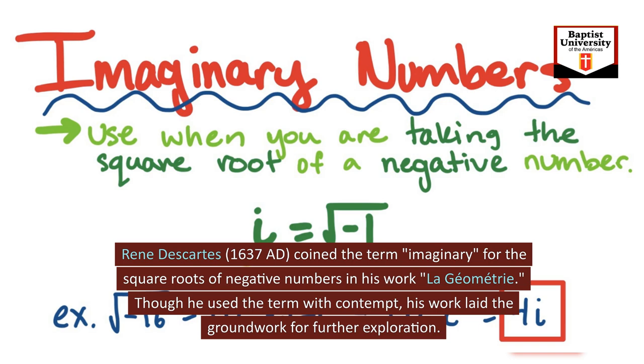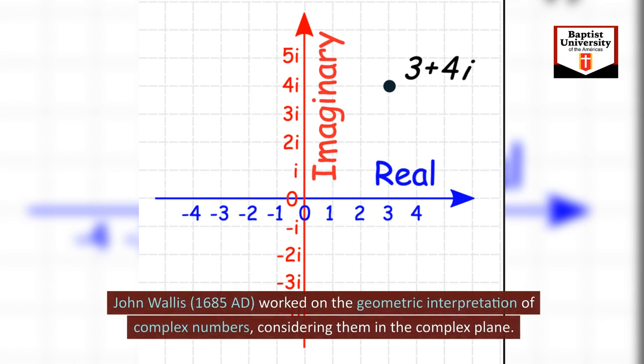John Wallis, 1685 AD, worked on the geometric interpretation of complex numbers, considering them in the complex plane.